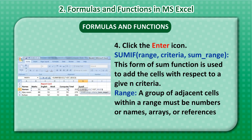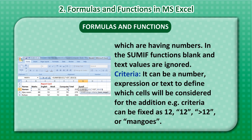SUMIF(Range, Criteria, Sum Range): This form of the Sum function is used to add cells with respect to a given criteria. Range is a group of adjacent cells; the values within the range must be numbers, names, arrays, or references containing numbers. Blank and text values are ignored in the SUMIF function.